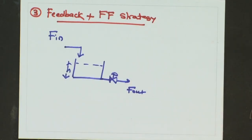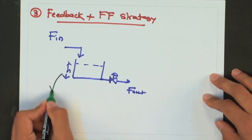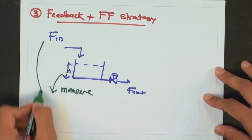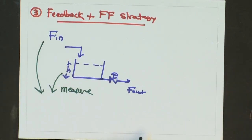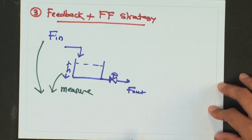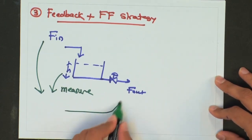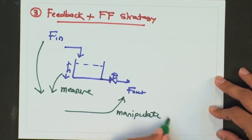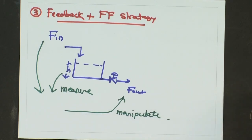In this strategy, what you do is you measure the controlled variable as well as the disturbance. And based on this combined information you take an action to manipulate the outlet flow rate. As the name suggests, it is a combination of feedback and feed forward control strategy wherein you measure the disturbance variable as well as the controlled variable and take an action accordingly.